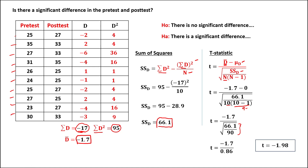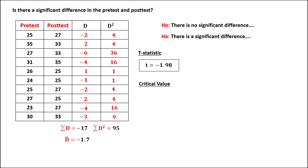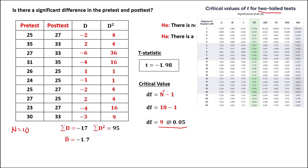Since we now have the t-value, we can find the critical value. First, we solve for the degrees of freedom using the formula n minus 1. Since n is 10, we have 10 minus 1, so the degrees of freedom is 9. Then for the alpha value, this is 0.05. Using the degrees of freedom and alpha value from the t-table, we use the two-tailed test because there is no direction. Therefore, the critical value is 2.262.